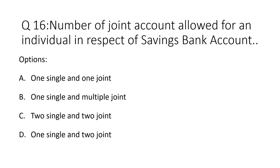Question 16: Number of joint accounts allowed for an individual in respect of saving bank account. Option A: one single account and one joint account. Option B: one single account and multiple joint accounts. Option C: two single accounts and two joint accounts. Option D: one single account and two joint accounts. The correct answer is Option A — one single account and one joint account.